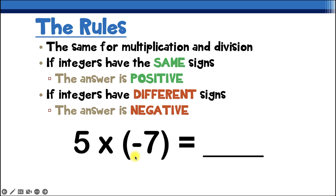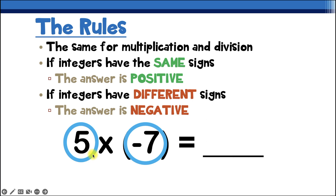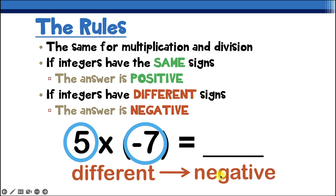Let's take a look at our first example: 5 times negative 7. The first number, 5, is a positive value because there's no sign, and the second number, negative 7, is negative. These signs are different — one's positive and one's negative — which means our answer is going to be negative. 5 times 7 is 35, so our answer is negative 35.